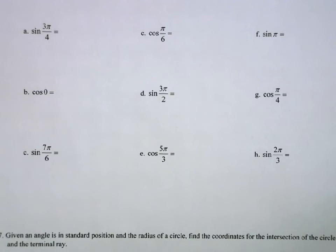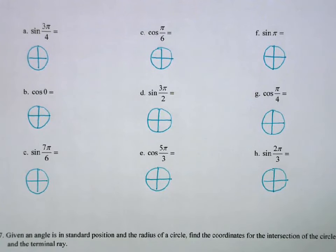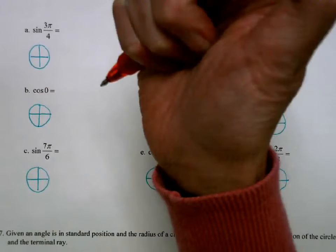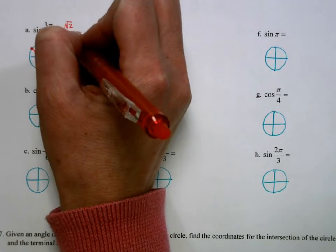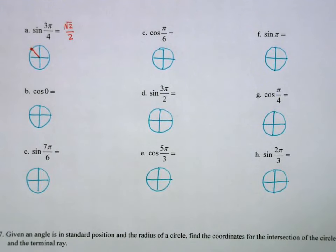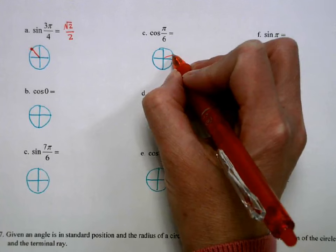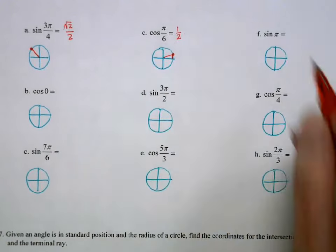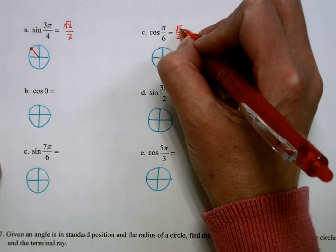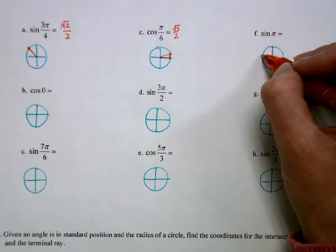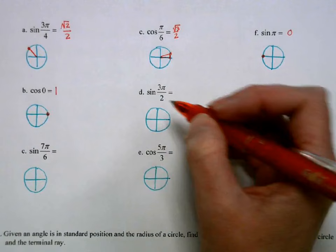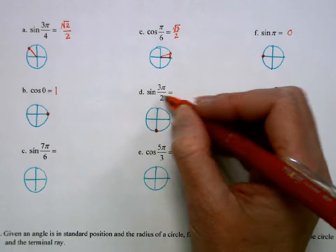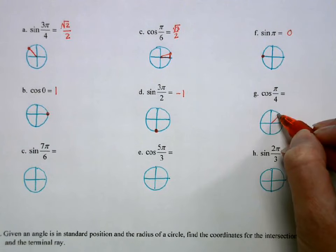We find these values by thinking through the unit circle. For sin(3π/4): 3π/4 is the halfway angle in the second quadrant, and we want the y-value, which is √2/2. For cos(π/6): π/6 is closest to the x-axis with long x, so the x-value is √3/2. For sin(π): y-value at π is 0. For cos(π): x-value is −1. For cos(3π/2): y-value is −1. For sin(π/4): in the first quadrant, positive √2/2.